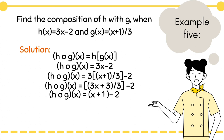Reduce the fraction and it becomes x + 1 − 2. Then we simplify. Therefore, the composition of h with g is x − 1.